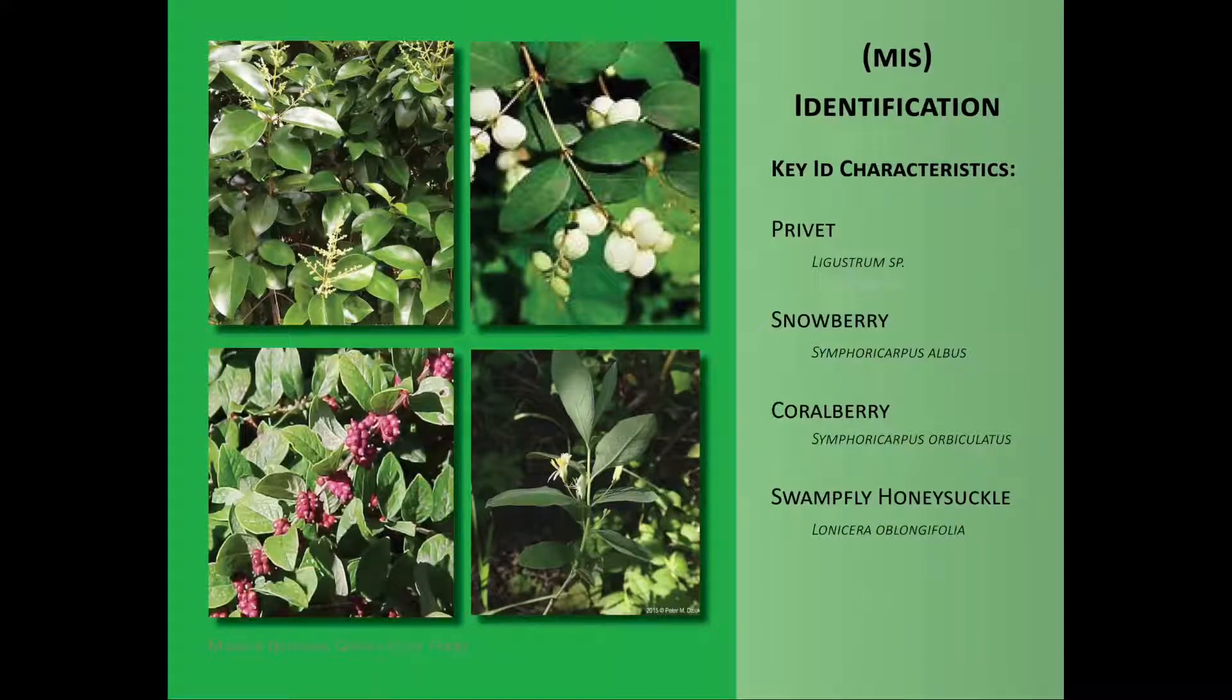These images are some lookalike plant species that should not be misidentified as the target. They would make great substitutions in place of the target. A less common native honeysuckle species, swamp fly honeysuckle, has yellow flowers in the leaf axils.